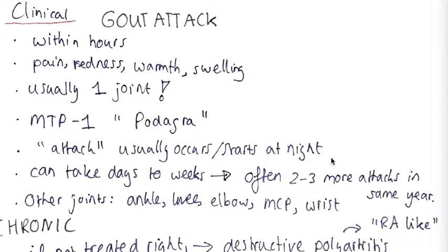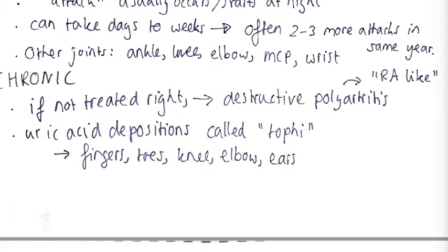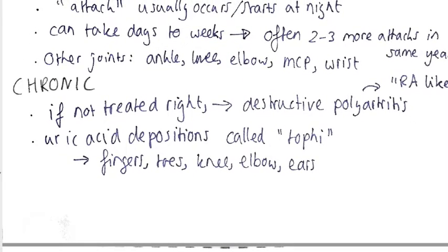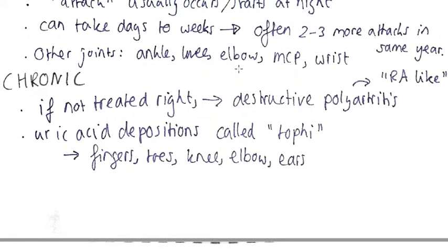Besides the podagra, other joints can be affected such as the ankle, the knee, the elbow, the MCP joints of the hand, and the wrist. If it's not treated well, you can get a chronic form of gout and this can look like a destructive polyarthritis, a little bit like rheumatoid arthritis because there are also multiple joints affected.